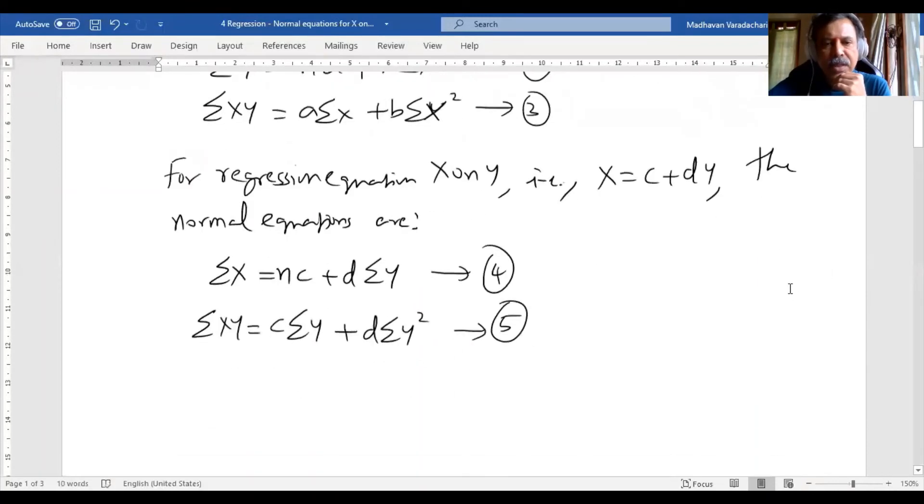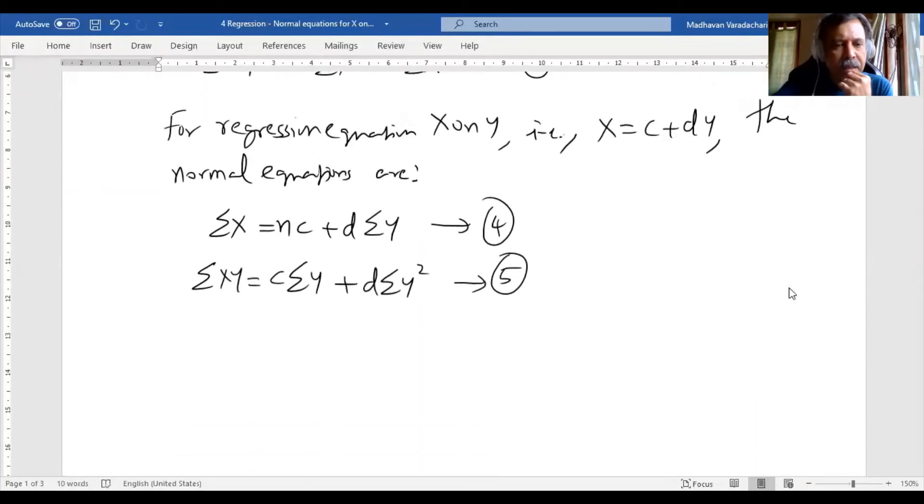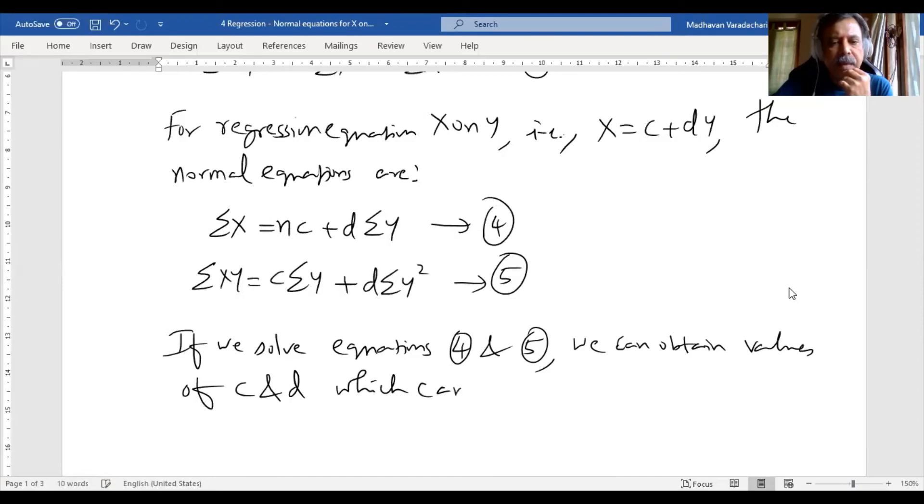These are the normal equations for the regression equation X on Y. If we solve equations 4 and 5, we can obtain values of C and D, which can be substituted in X = C + DY.